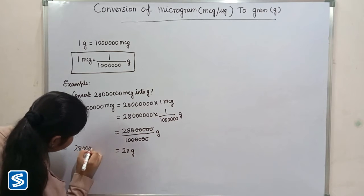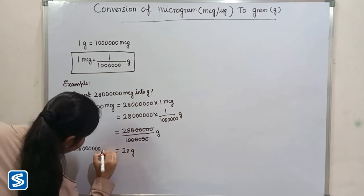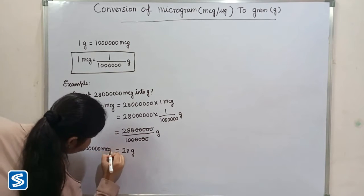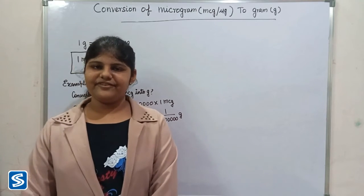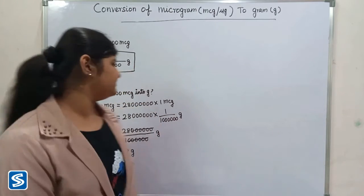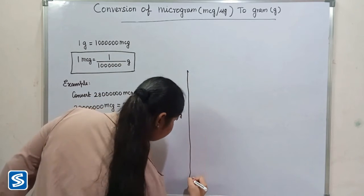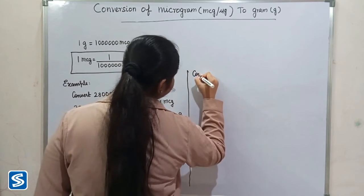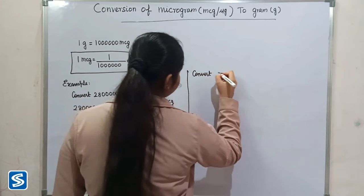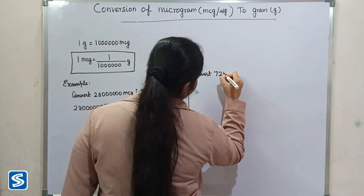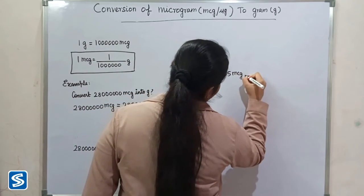So 28 million micrograms is equal to 28 grams. Next we will take another example: convert seven thousand two hundred and fifty-five micrograms into gram.